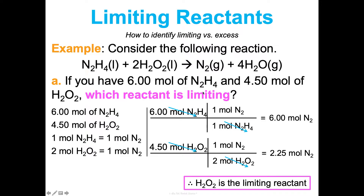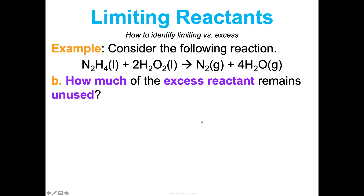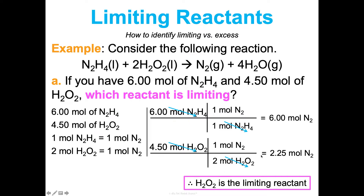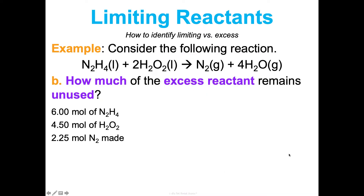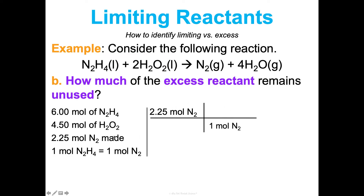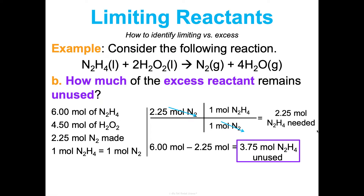Another question I could ask after identifying the limiting reactant is: how much of the excess reactant is going to be unused? We're starting with 6.00 moles of dinitrogen tetrahydride. Since the maximum product we can make is 2.25 moles of nitrogen gas, and the mole ratio is 1:1, we only need 2.25 moles of dinitrogen tetrahydride. Since we have 6 moles and only need 2.25, we subtract and find 3.75 moles of dinitrogen tetrahydride unused.